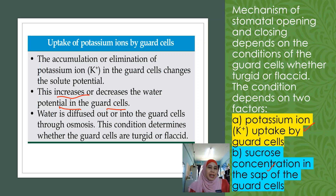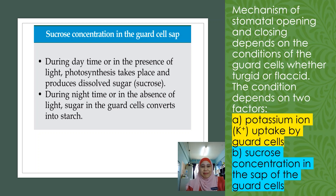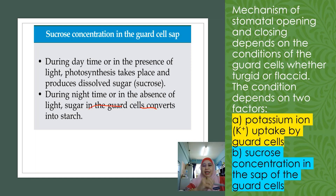Whether the guard cell becomes turgid or flaccid depends on the uptake of potassium ions. The second factor is the sucrose concentration in the guard cell sap. During daytime or when there is light, photosynthesis will occur — remember, guard cells have chloroplasts. Photosynthesis occurs in the chloroplasts and produces dissolved sugar, that is sucrose. During nighttime or in the absence of light, the sugar in the guard cell will be converted into starch.